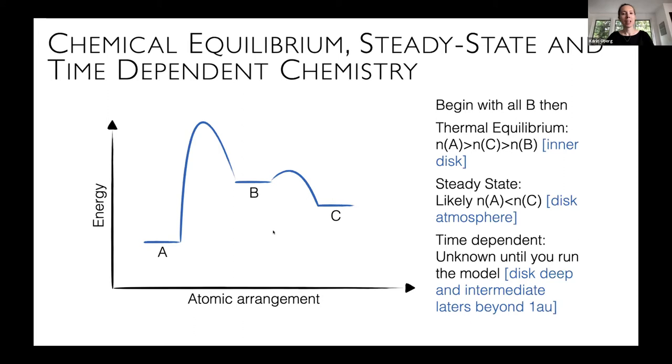And the former thermal equilibrium, you get in the inner disk. This steady state where you can't access some species you'll typically see in the atmospheres of disks. And then finally, if you are in the mid-plane or deeper layers of disks beyond one AU, then you may not ever get to a place where you're going backward and forward at the same rates. And the chemistry just continues to change with time. And you can't really know the outcome of those kind of models unless you actually run them and stop them at the specific time.